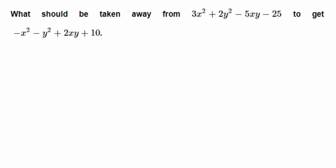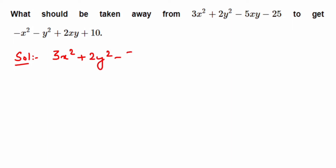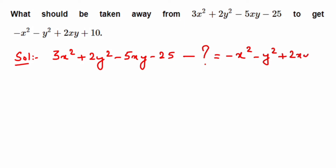Here is a question from algebra: what should be taken away from 3x² + 2y² - 5xy - 25 to get -x² - y² + 2xy + 10? Let me write down the expression first. From the first expression 3x² + 2y² - 5xy - 25, we subtract something to get -x² - y² + 2xy + 10.